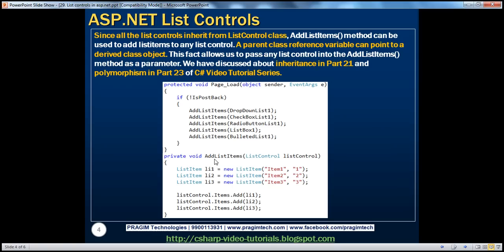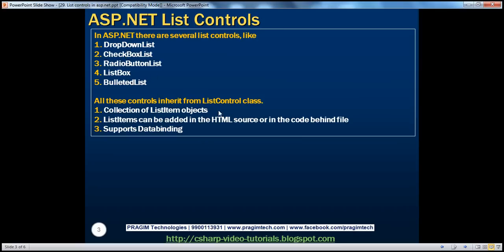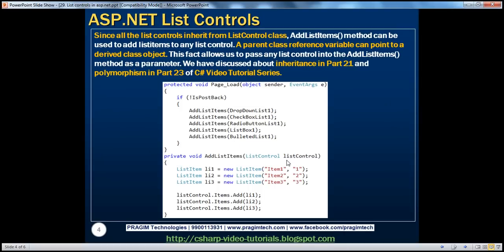I have a method called `AddListItems` which takes a parameter of type `ListControl`. Remember, all these controls — drop-down list, checkbox list, et cetera — all inherit from the ListControl class. So we are using the parent type as a parameter. The implementation is pretty straightforward: we spin up three ListItem objects, specify their text and value, and then add those objects to the list control. We then pass in the drop-down list, checkbox list, and radio button list as needed. It's possible because all these controls inherit from ListControl — inheritance is used at its best here.